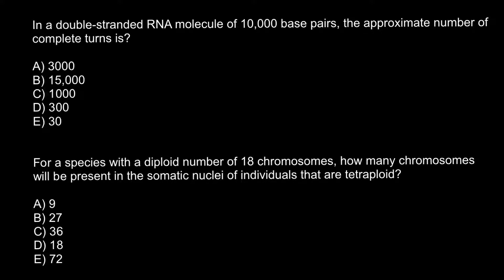Hello and welcome to Nikolai's genetics lessons. Today I have prepared two multiple choice questions for you. Here's the first question: in a double stranded RNA molecule of 10,000 base pairs, the approximate number of complete turns is? You have to choose the correct answer.